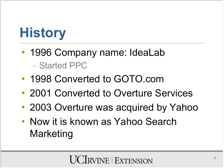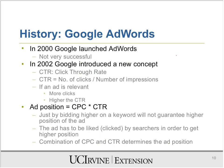Let's look briefly at the history of PPC. PPC actually started in 1996 by a company called Idealab — many people think Google started it, but Google did not. Idealab later got converted into goto.com, and then changed the name to Overture Services, which was then acquired by Yahoo. So you can see how this thing has progressed over the years.